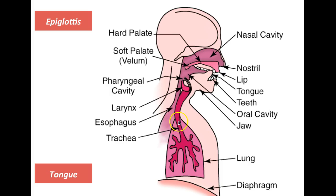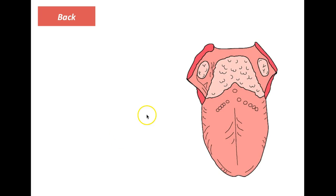That covers the larynx and the epiglottis. The air goes out through the trachea, into the larynx, and finally into the mouth or nasal cavity. This is the mouth cavity and this is the nasal cavity — and that is where the tongue starts playing a role in the production of speech.